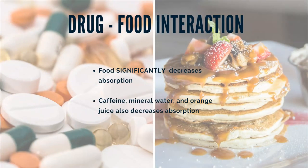For food-to-drug interactions, food significantly decreases absorption, and beverages like caffeine, mineral water, and orange juice can also decrease absorption. The drug should be administered with water first thing in the morning — about 6 to 8 ounces — 30 minutes before taking any medications or food. Take it before food, before coffee, before OJ, before mineral water. It can be taken with regular plain water.